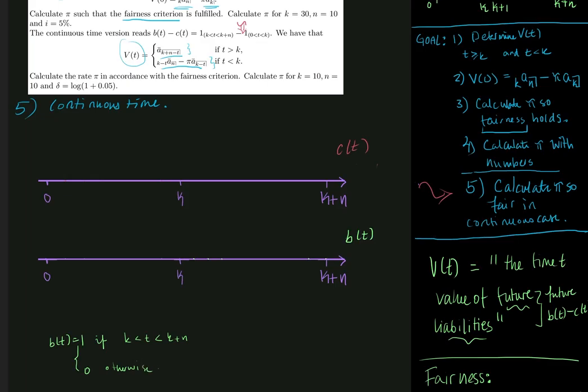And what do we have about c of t? Well c of t is equal to pi constantly if t lies between 0 and k. I could also write this as 0 smaller than t smaller than k, but now you know two ways to write it. And otherwise it is just 0.